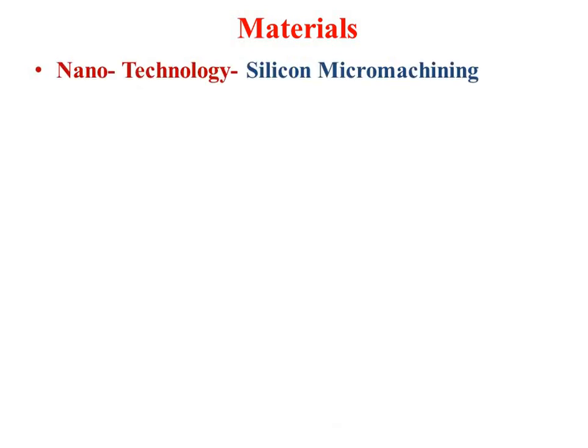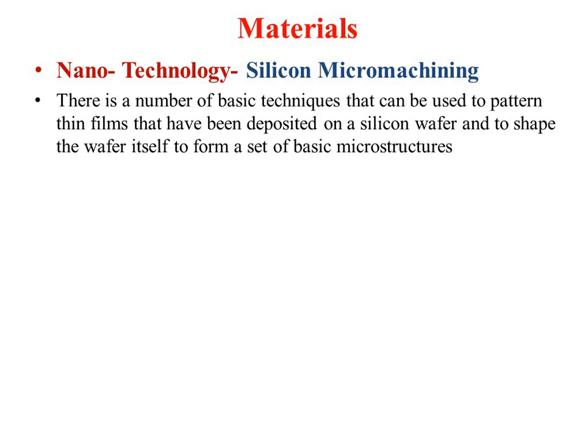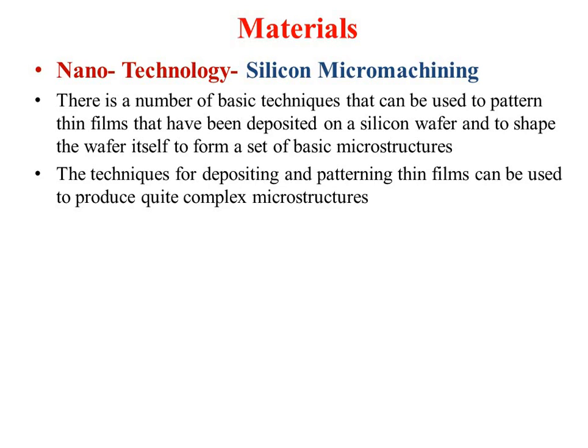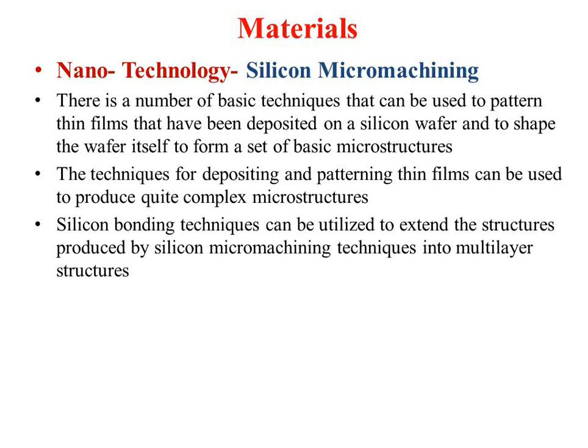The second technique is silicon micromachining. There are a number of basic techniques to pattern thin films deposited on silicon wafers and to shape the wafer into required microstructures. These techniques can produce quite complex microstructures. Additionally, silicon bonding techniques can be utilized to extend structures produced by silicon micromachining into multi-layer structures — similar to sandwiching glass plates with adhesive between them.